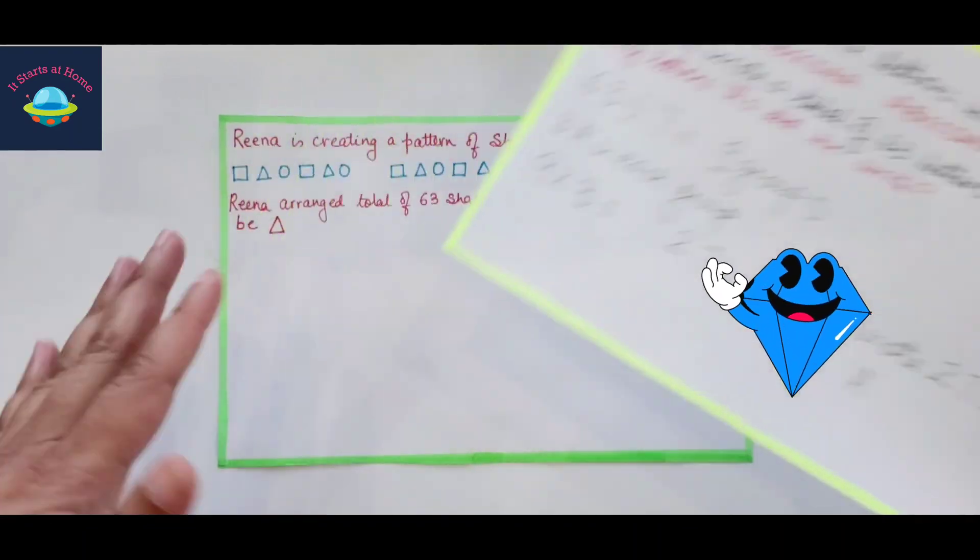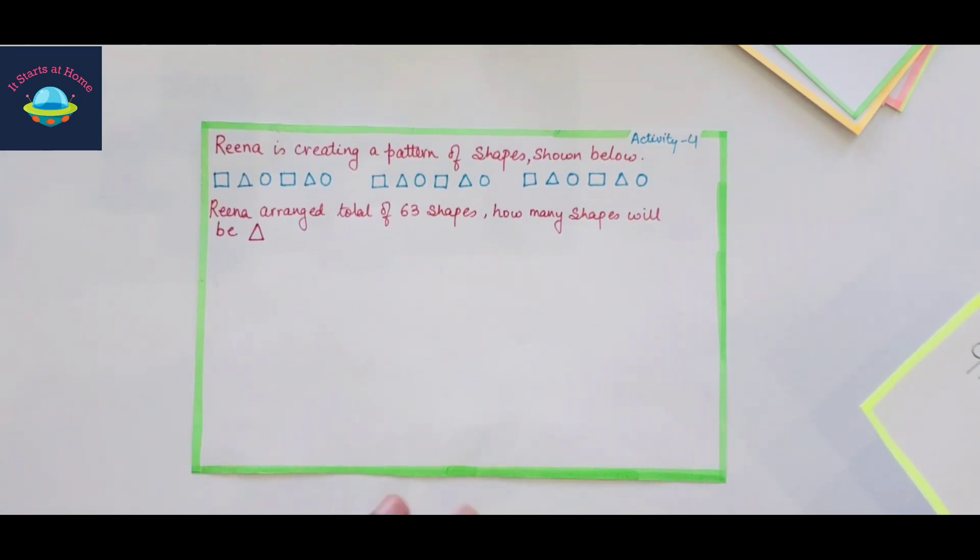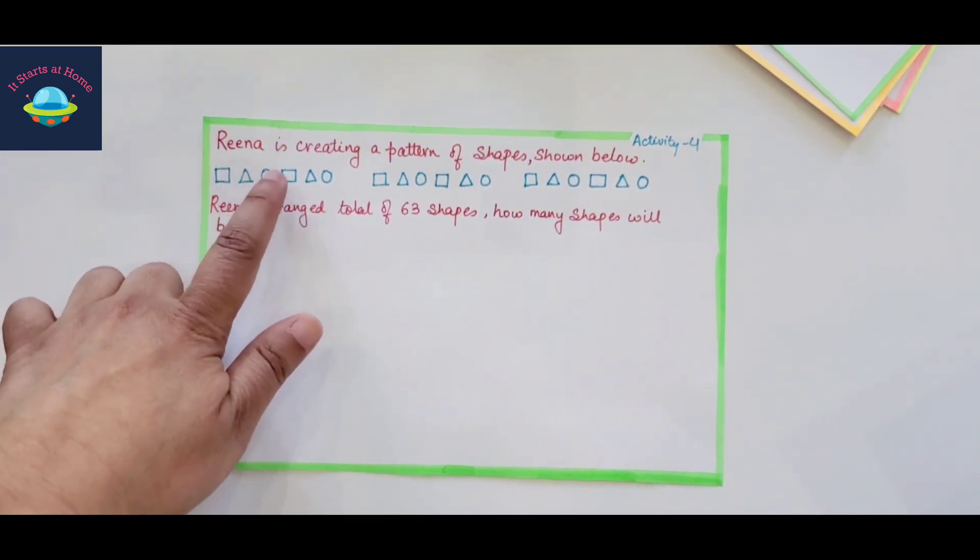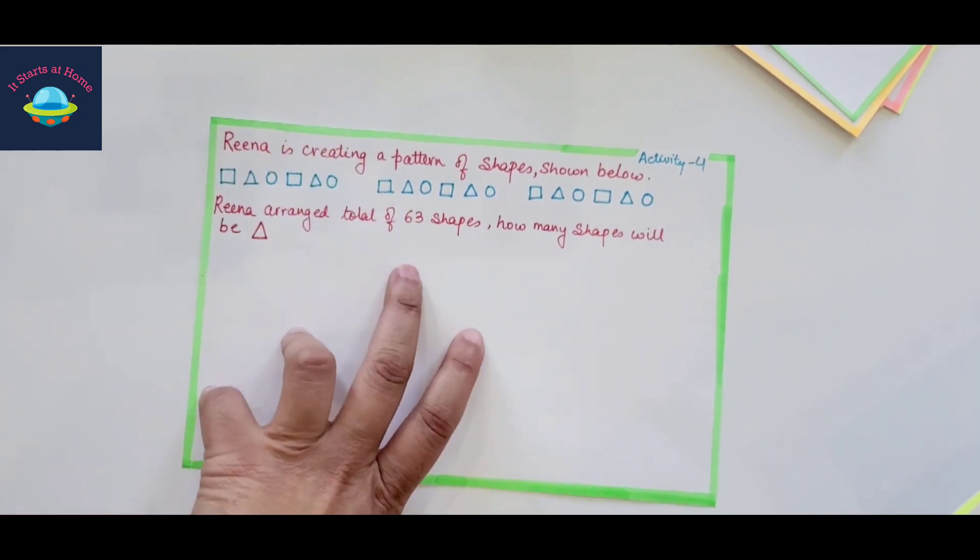In a similar way, there's another question which is going to be solved like this: Rina is creating a pattern of shapes, show below. And you have 1, 2, 3, 4, 5, 6. So now you have 6 and you again are creating 63 shapes.